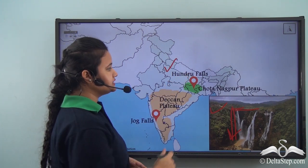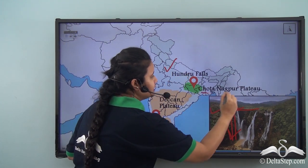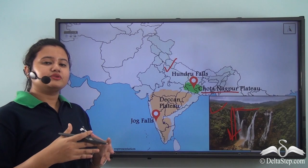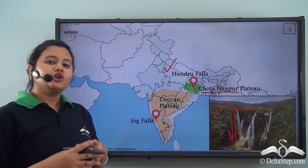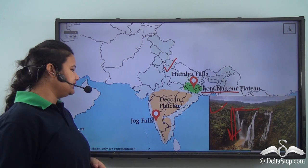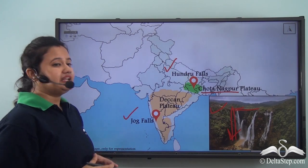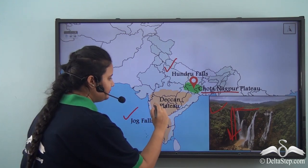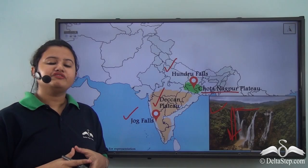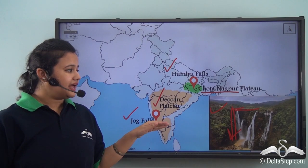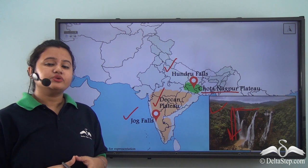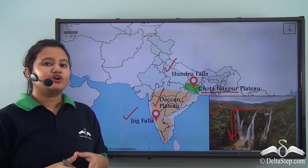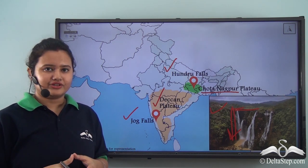Another famous waterfall in India is Jog Falls, situated in the Deccan Plateau region. So we find that plateaus, due to their topography, offer beautiful sights of waterfalls.